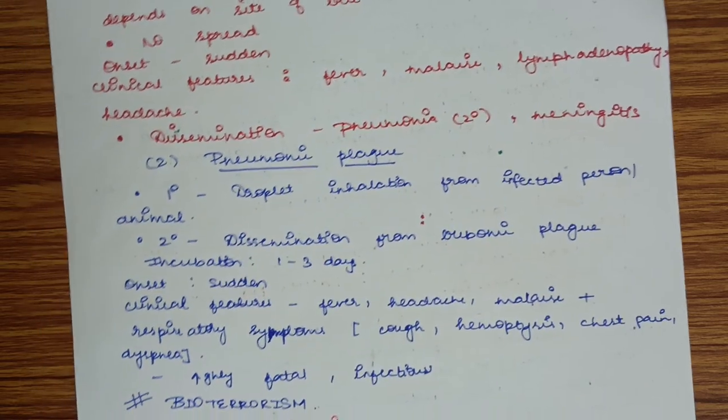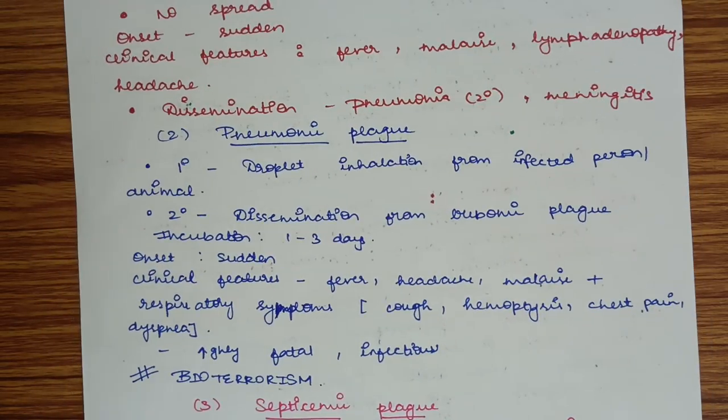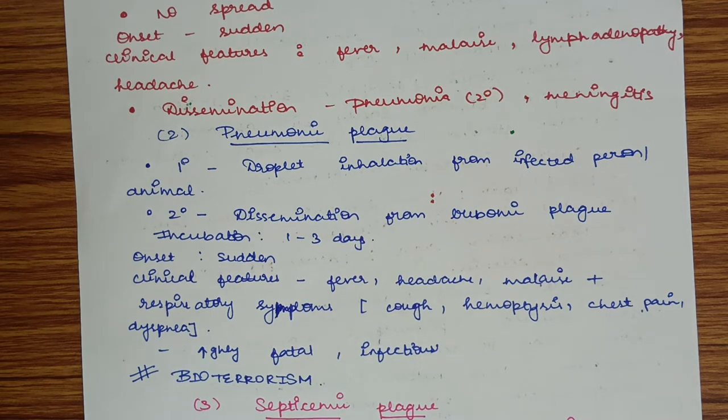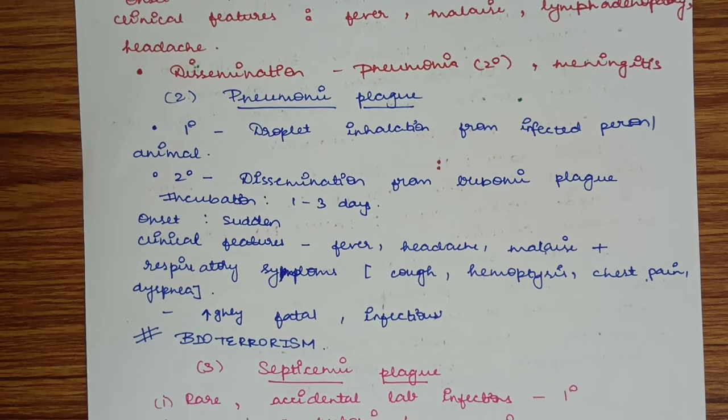Pneumonic plague may be primary or secondary. Primary plague is transmitted by droplet infection from infected person or animals. Secondary plague is by dissemination from bubonic plague. Incubation period is one to three days. Onset is sudden.